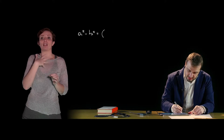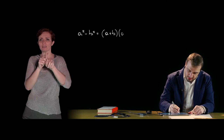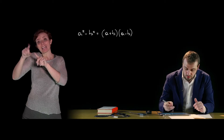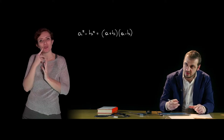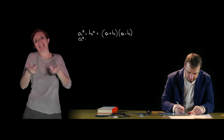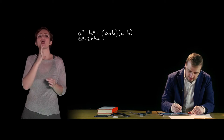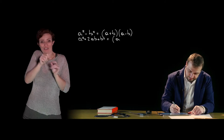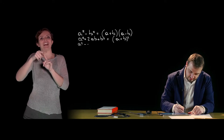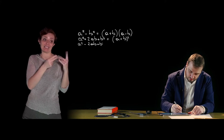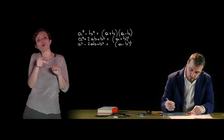Un ulteriore importante metodo di scomposizione, forse il più utilizzato, è quello che sfrutta i prodotti notevoli come tecniche di scomposizione. In particolare abbiamo la differenza di quadrati che si scompone nella somma dei monomi per la loro differenza: a² − b² = (a + b)(a − b). È anche possibile, notando nel polinomio la presenza di due quadrati e del doppio prodotto delle loro basi, riconoscere il quadrato del binomio, sia con doppio prodotto positivo che negativo.